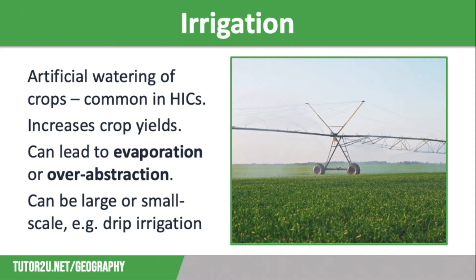Evaporation can be a big issue and irrigation often leads to over-abstraction of water sources which cannot recover. An example of this is Lake Chad, which was once the sixth largest lake in the world but has decreased by more than 90% in area over the last 40 years after being used for irrigation.